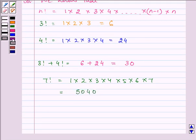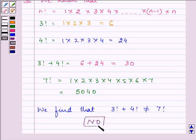So what we can say in the end? We find that 3 factorial plus 4 factorial is not equal to 7 factorial. So the final answer is no.